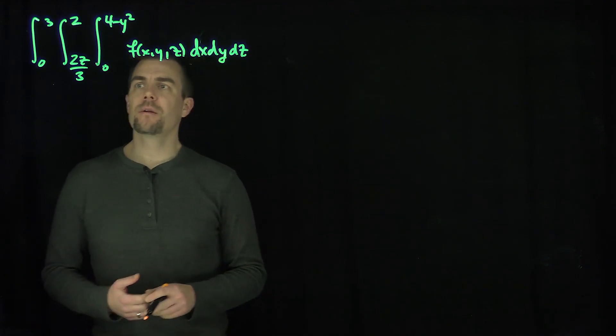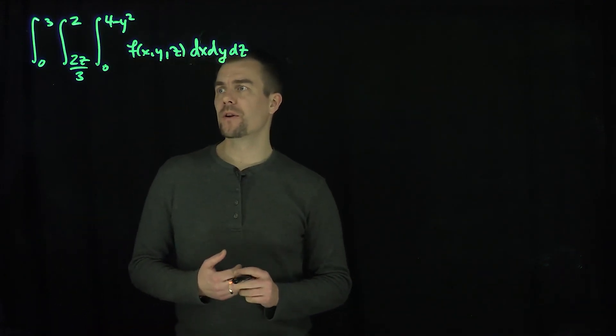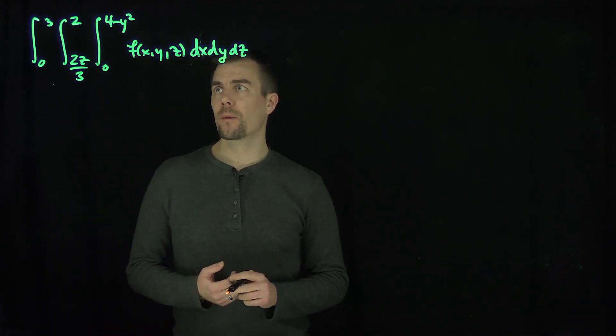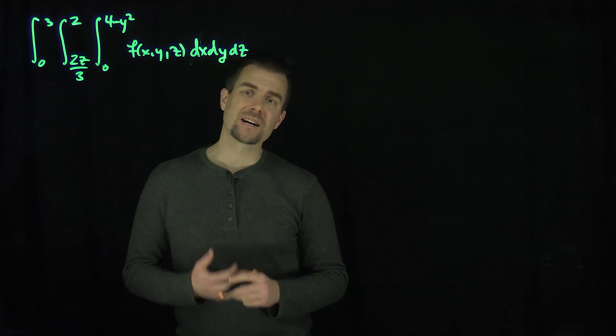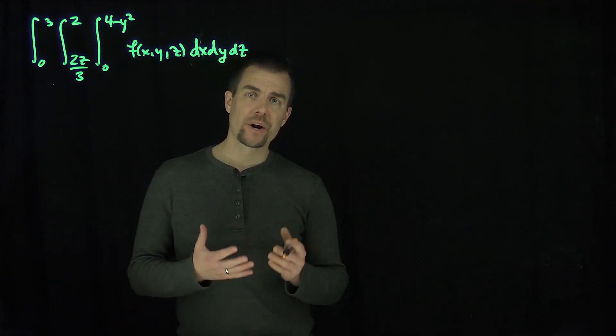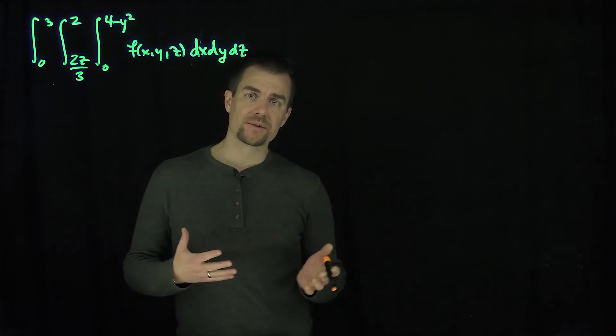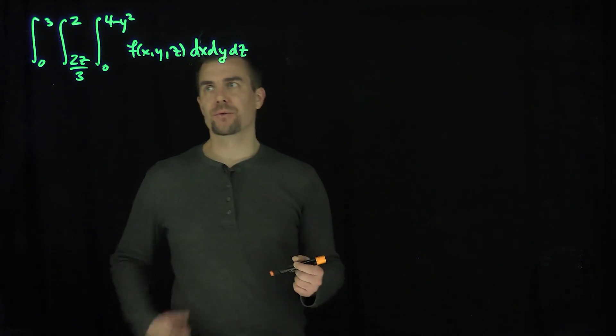Let's consider the integral from 0 to 3, the integral from 2z/3 to 2, and the integral from 0 to 4 minus y squared of a function dx dy dz. Let's figure out what the range of x, y, and z are in this region and use it to sketch the region.